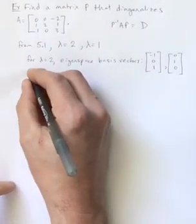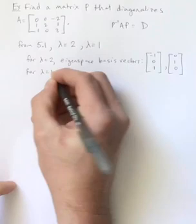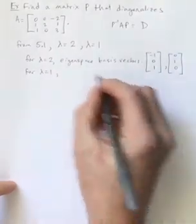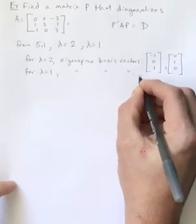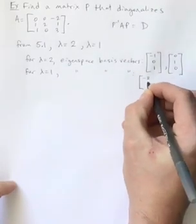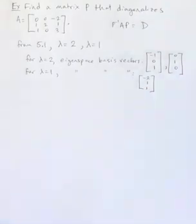And then for lambda equals 1, our eigenspace basis vector, I guess there's only one of them, is negative 2, 1, 1. All right?